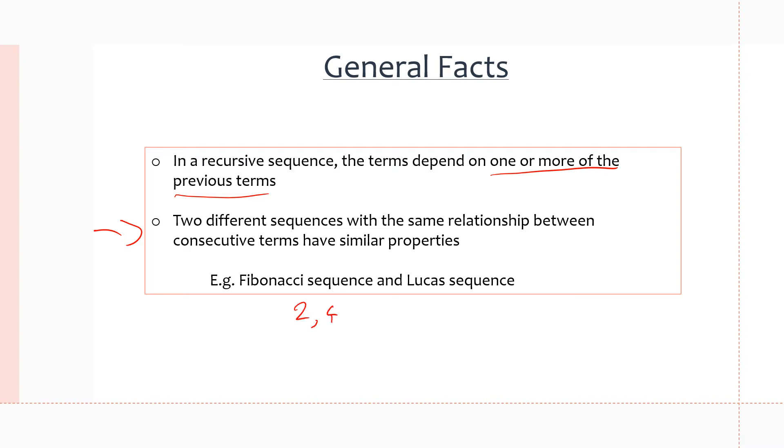For example, if we have 2, 4, 6, 8, and 10, this sequence holds the same properties as 1, 3, 5, or even 20, 22, or even 19, 21, 23, 25, and 27. Even though these sequences may seem really different, they hold the same properties because their common difference is 2 between each term.